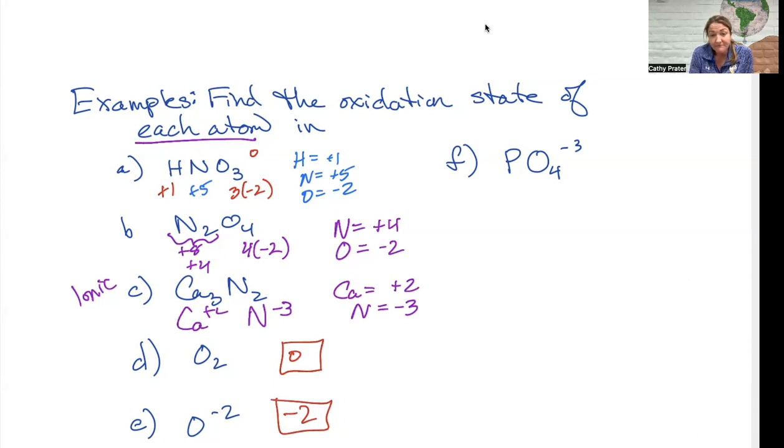My last example is a polyatomic ion, and in this case they don't combine to be neutral, they combine to be negative three. So what must the phosphorus be if when combined with four negative twos the total is negative three? So what number would fit into there? That would make the phosphorus a positive five.